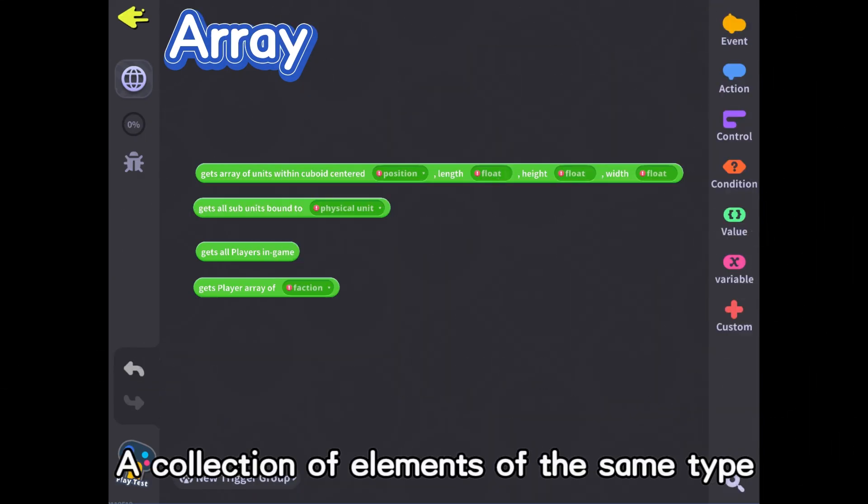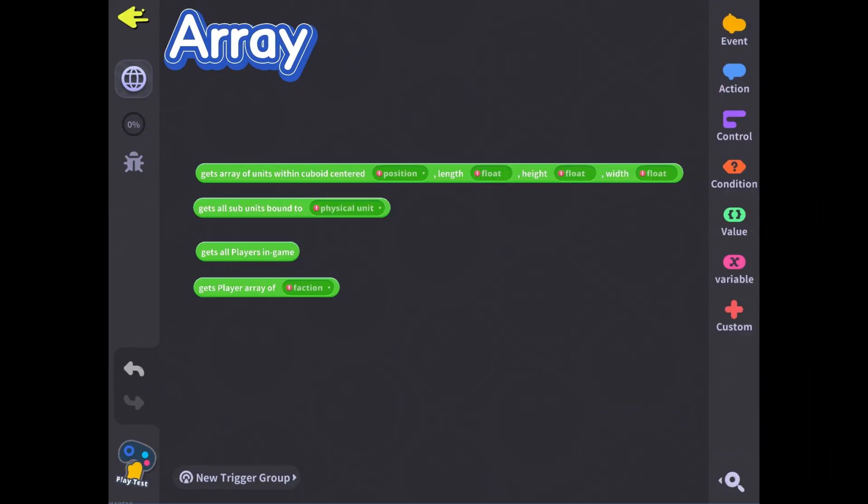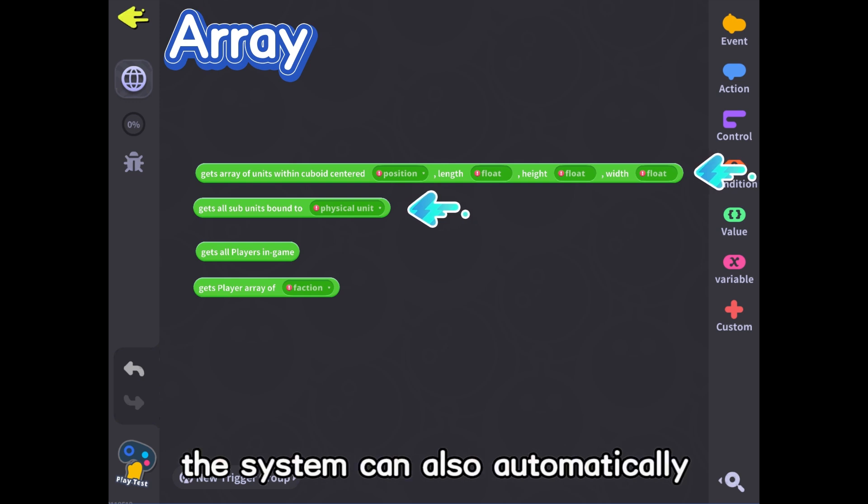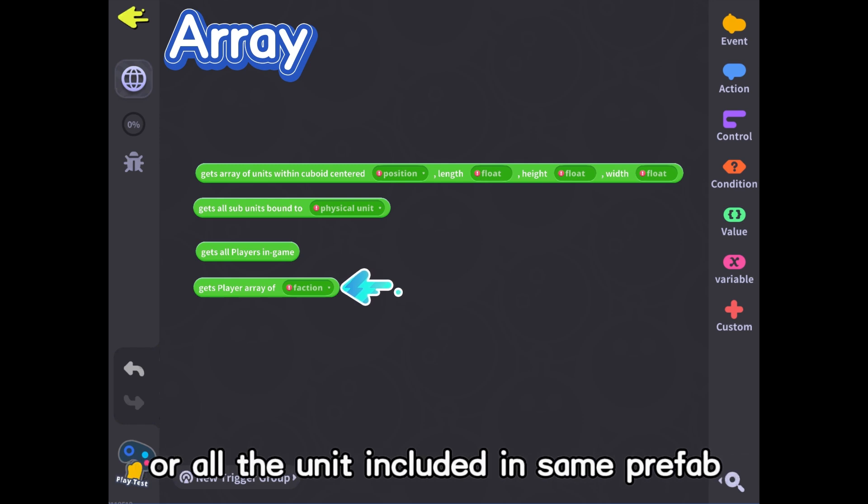Array: A collection of elements of the same type. Besides lists defined by us, the system can also automatically extract some arrays, such as an array of players within a faction or all the units included in same prefab.